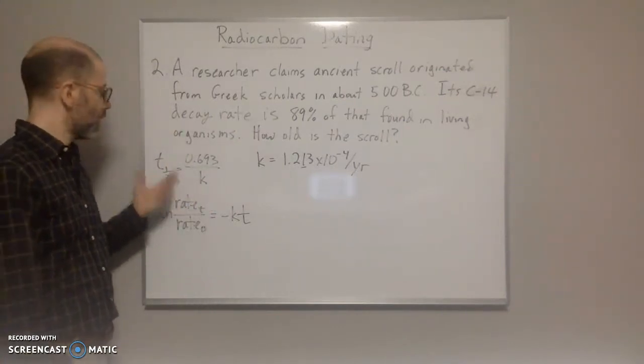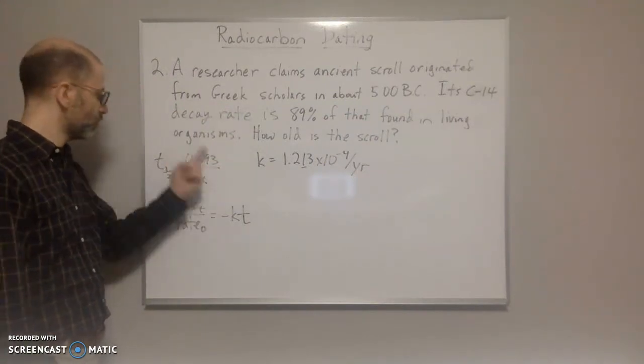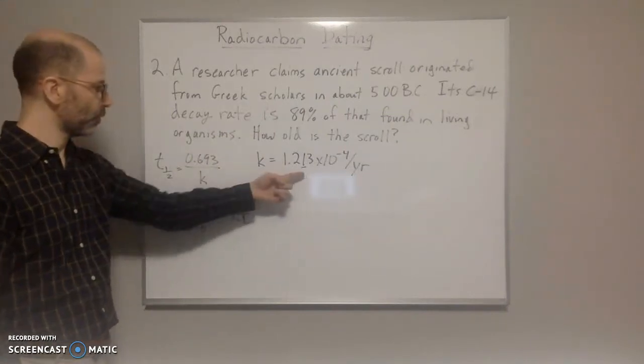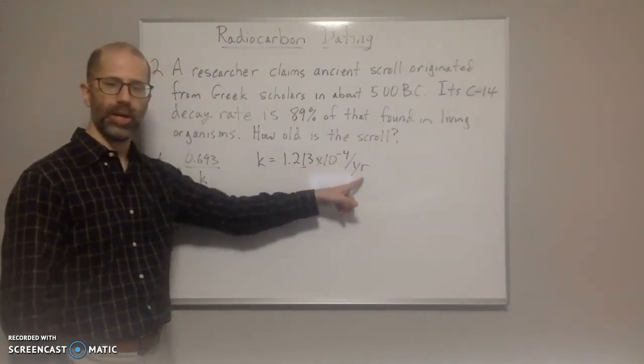So two steps again. Since we're doing carbon-14 again, we don't need to solve for k because we just did that in the second problem. So k is going to be the same, 1.213 times 10 to the negative 4 per year.